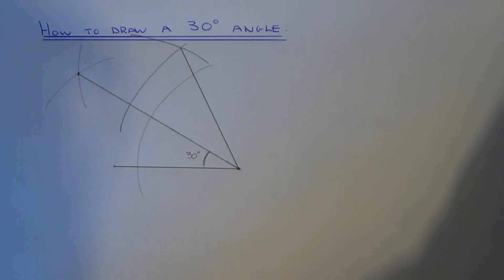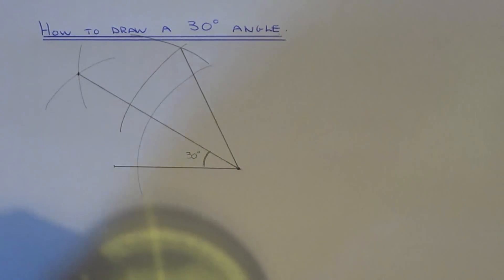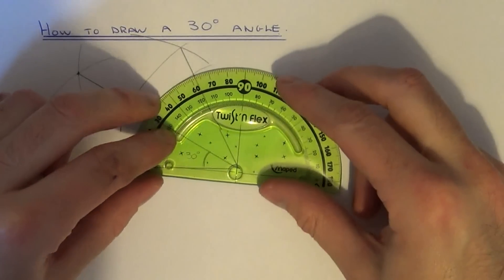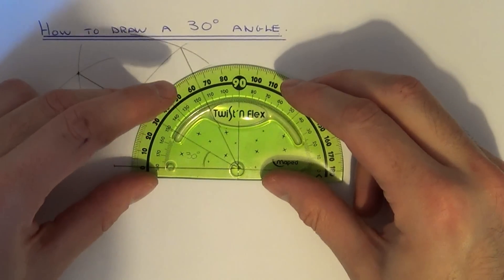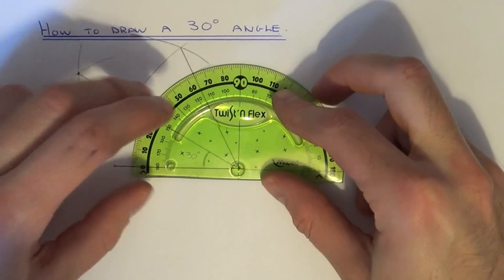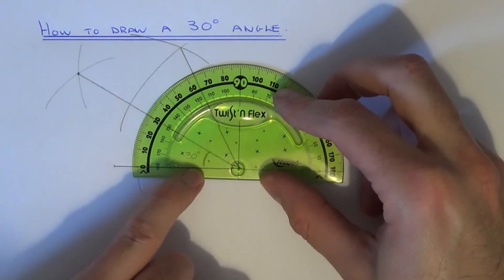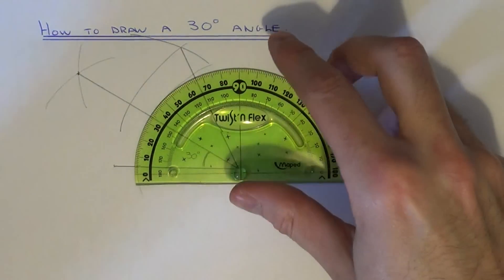So you can check that it's 30 degrees if you get your protractor. And as you can see, the angle that we've made is 30 degrees. Thanks for watching.